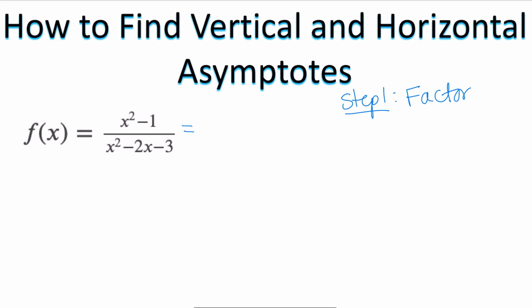The numerator is the difference of two squares, so this factors as (x + 1)(x - 1). The denominator, notice that what's going to multiply to give me negative 3 that's going to add to give me negative 2.